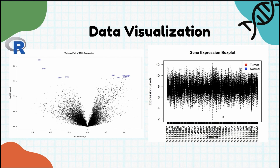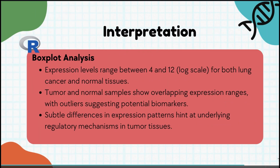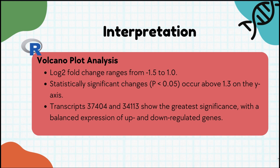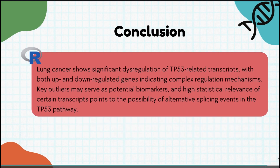In the box plot, expression levels range between 4 and 12 on the log scale for both lung cancer and normal tissues. While tumor and normal samples have overlapping expression ranges, there are outliers that suggest potential biomarkers and subtle differences in expression patterns hinting at underlying regulatory mechanisms in tumor tissues. In the volcano plot of TP53 expression, the log2 fold change ranges from -5 to 1. Statistically significant changes (p-value < 0.05) occur above 1.3 on the y-axis. We can see two transcripts — transcript 37404 and transcript 34113 — that show the greatest significance, with a balanced expression of up- and down-regulated genes.